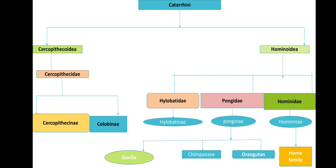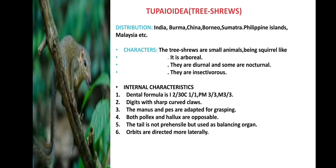This will be discussed further in the next video. Now let's discuss the prosimian family species. The first is Tupaioidea — Tree Shrews — a species of the prosimian suborder. Its distribution includes India, Burma, China, Borneo, Sumatra, Philippine Islands, and Malaysia. Tree shrews are small animals like a squirrel. They are arboreal, living on the trees.